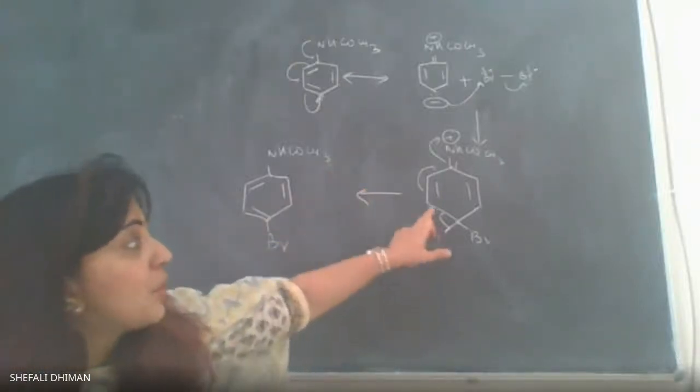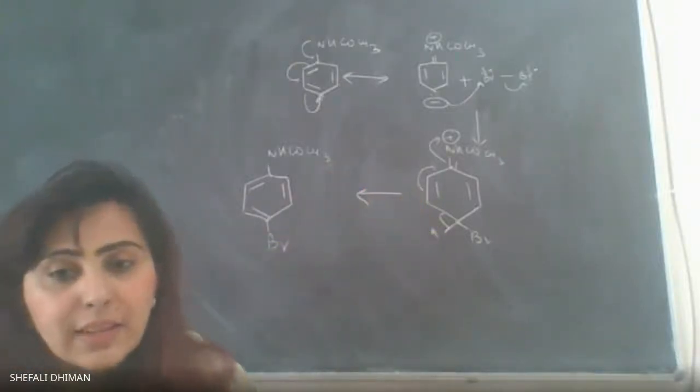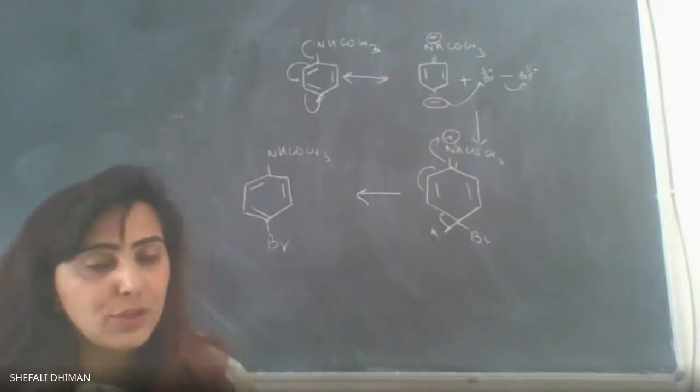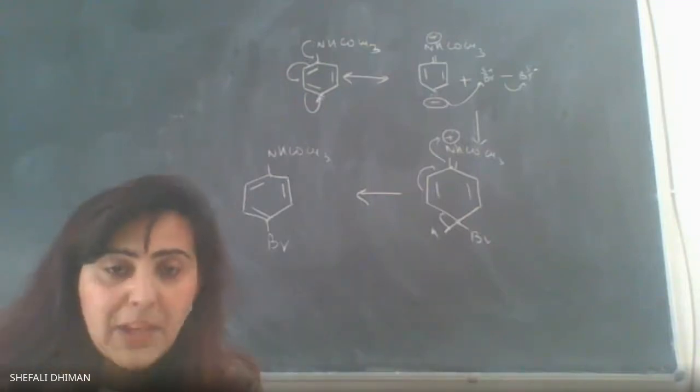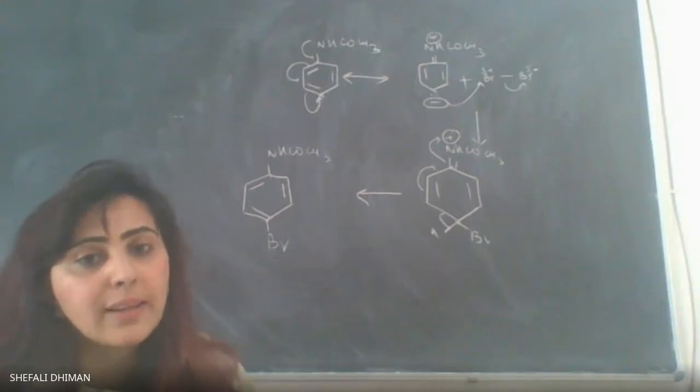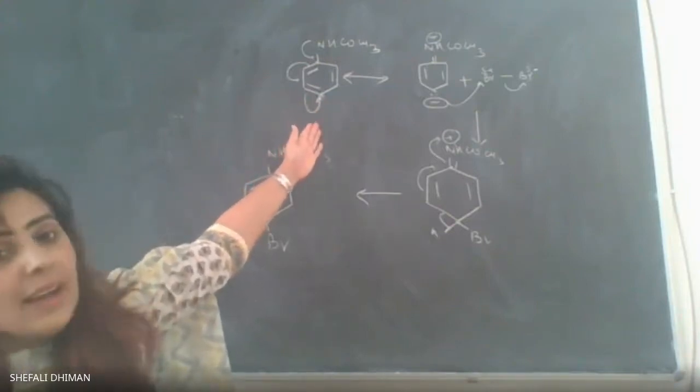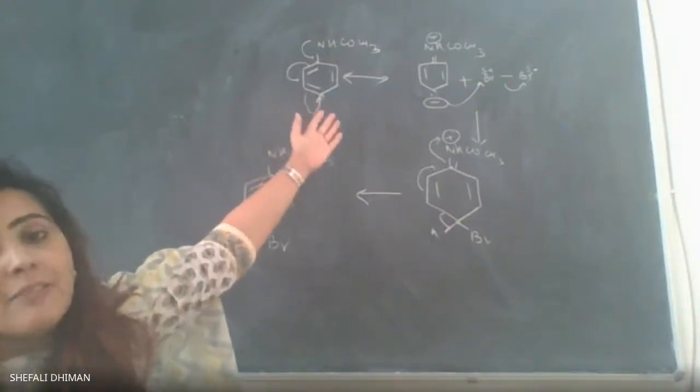Bromine reacts with aromatic substrates to form ortho and para substituted products. The major product would be para and the minor amount would be ortho. When we talk about acetanilide where you could have groups like NH2, OH, or benzene ring.